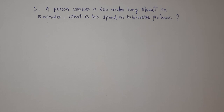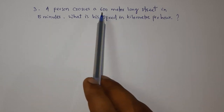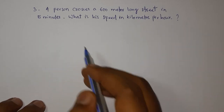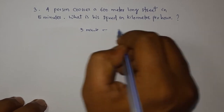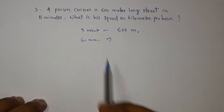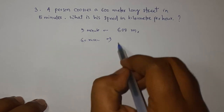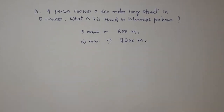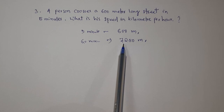Next question: a person crosses a 600-meter long street in 5 minutes. What is his speed in km per hour? This is a simple question. The person covers 600 meters in 5 minutes. In 60 minutes (1 hour) he would cover 7200 meters, which is 7.2 km per hour.